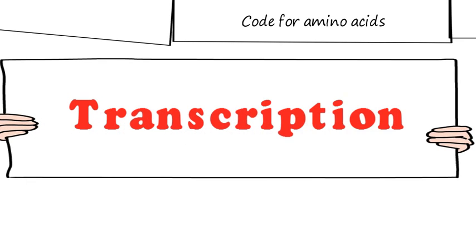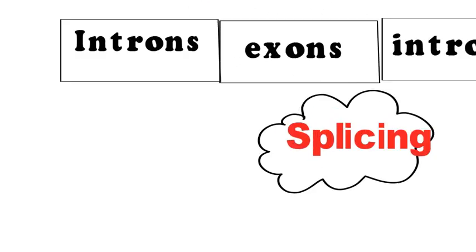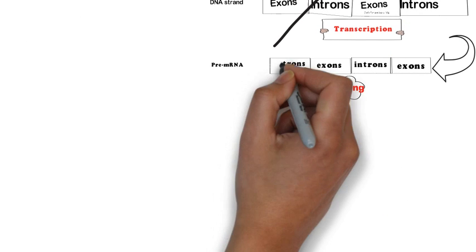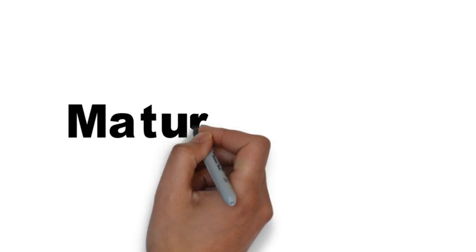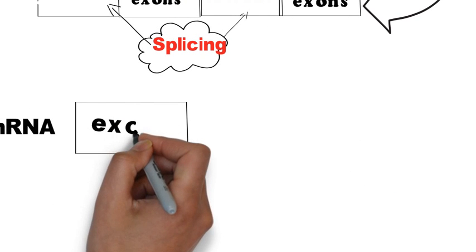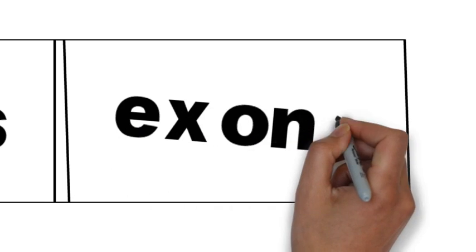During the process of transcription, a pre-messenger RNA strand is formed, made up of introns and exons as well. All of this occurs in the nucleus. During the process of splicing, the introns are cut out or removed by a specific enzyme, leaving only the mature messenger RNA that only consists of exons, which all code for an amino acid or several amino acids.